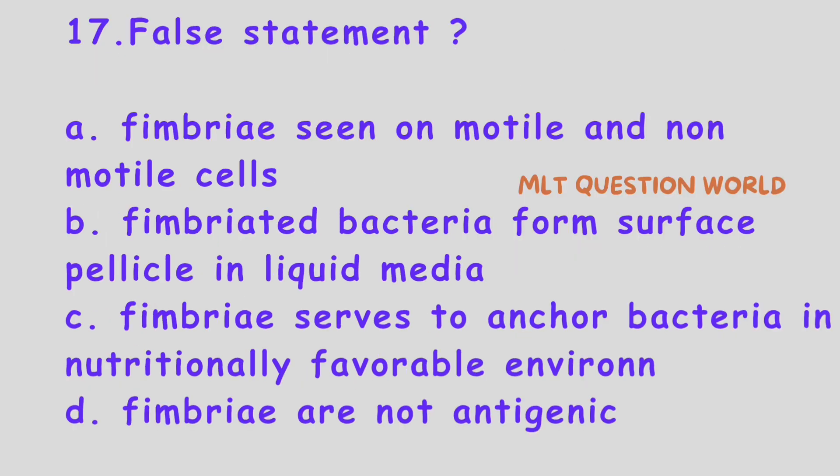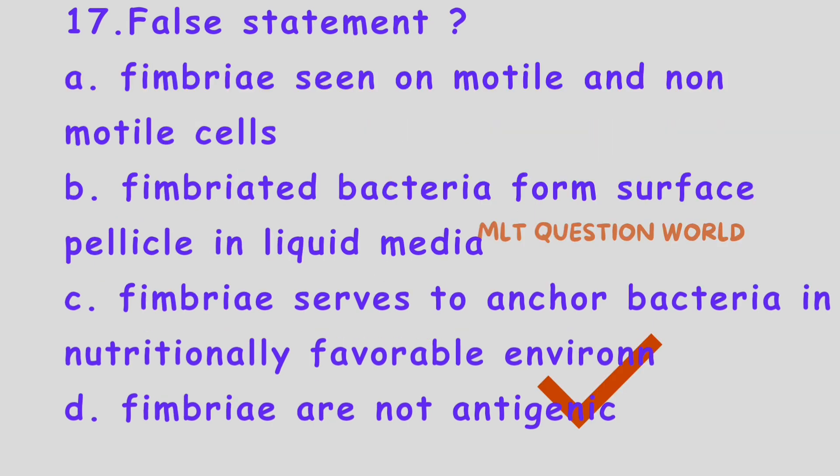Next question. Which among the following is a false statement? Option A, Fimbriae are seen on motile and non-motile cells. Option B, Fimbriated bacteria form surface pellicle in liquid media. Option C, Fimbriae serve to anchor bacteria in a nutritionally favorable environment. Option D, Fimbriae are not antigenic. The right answer is Option D. Fimbriae are not antigenic — this is false, because fimbriae are antigenic.